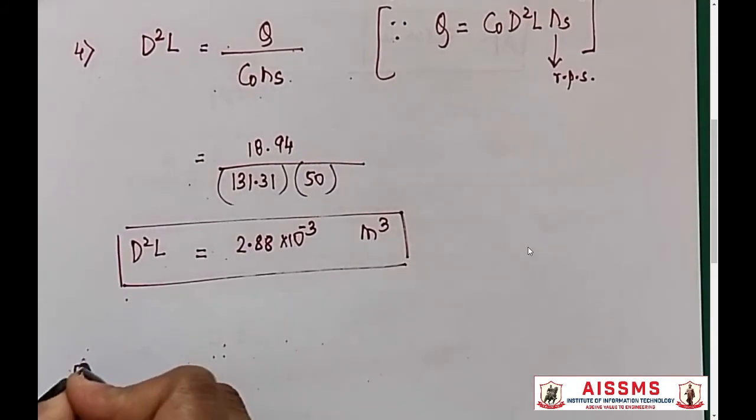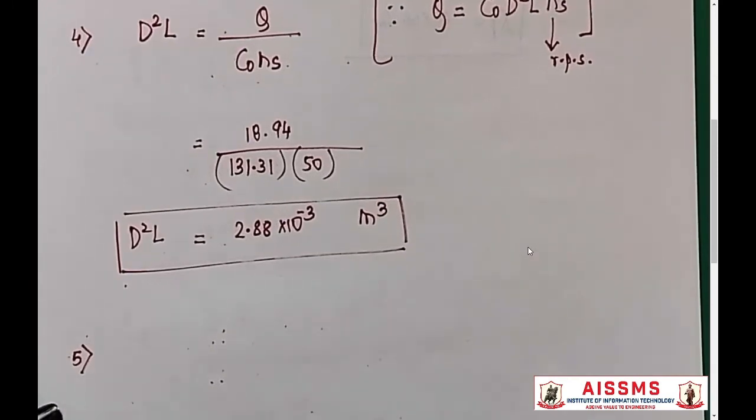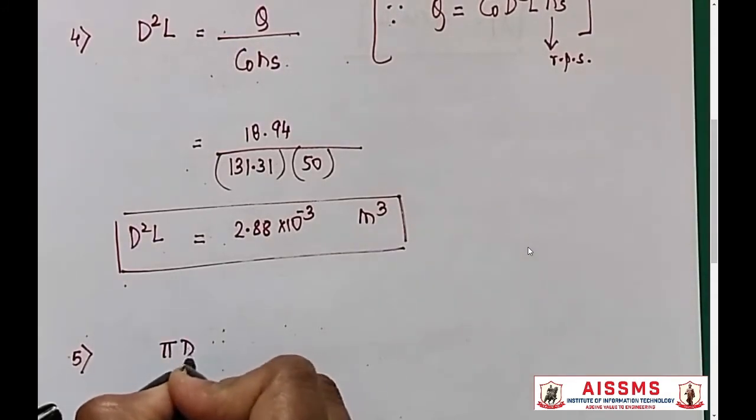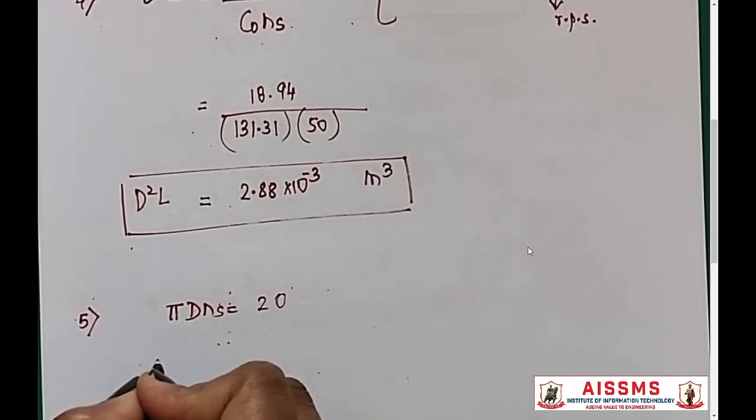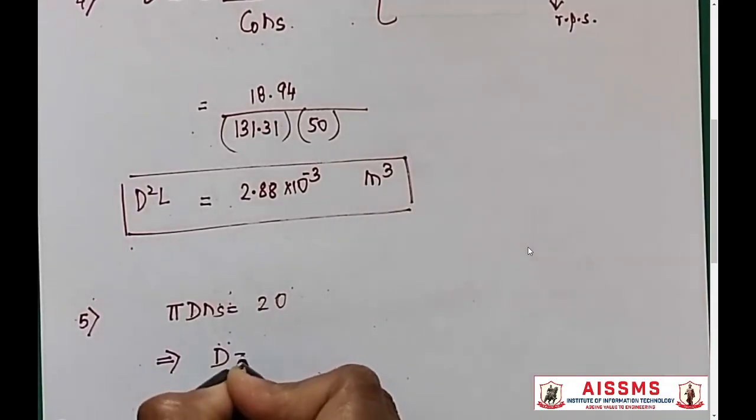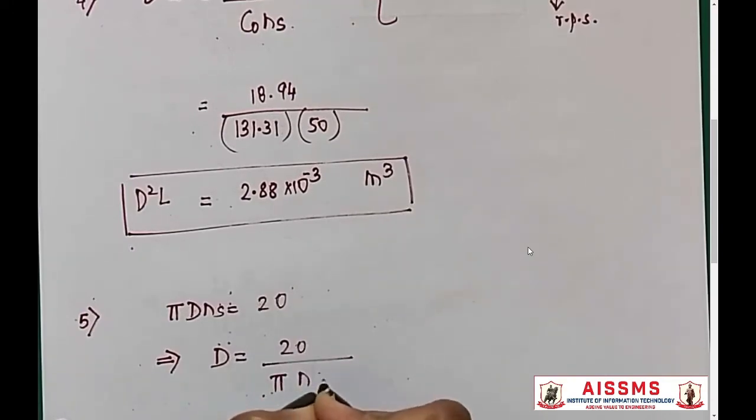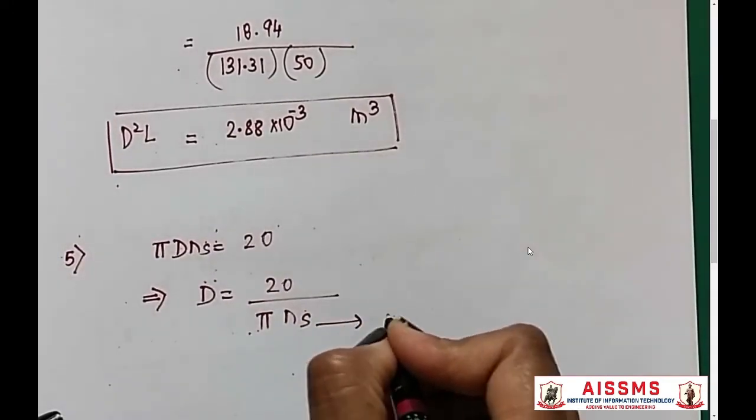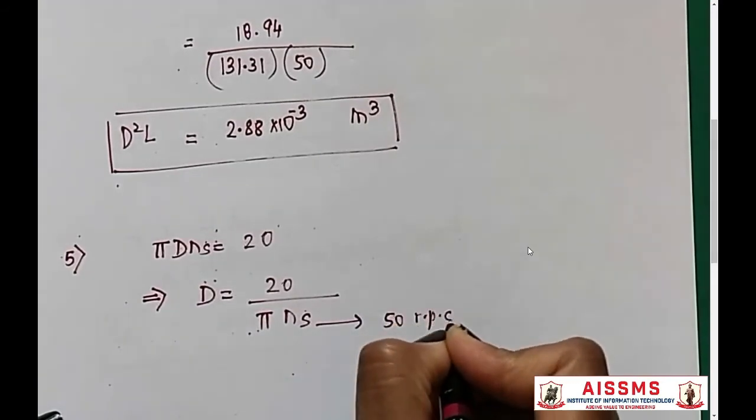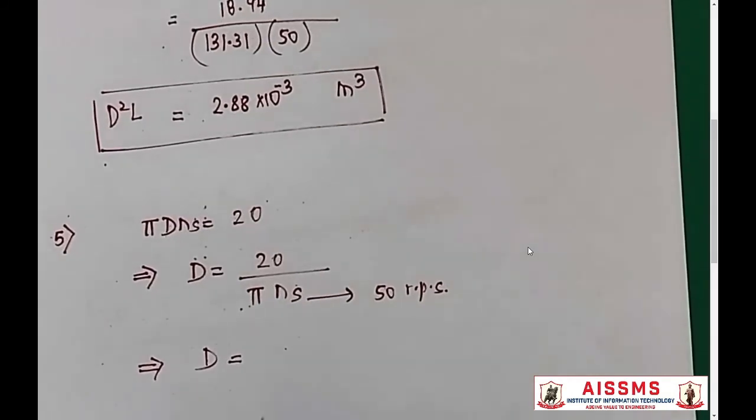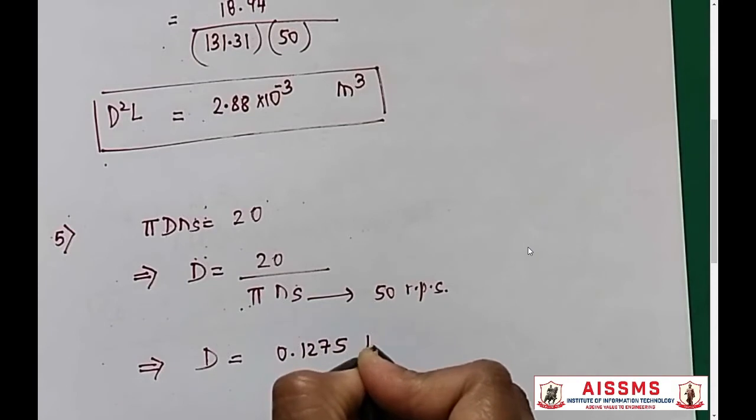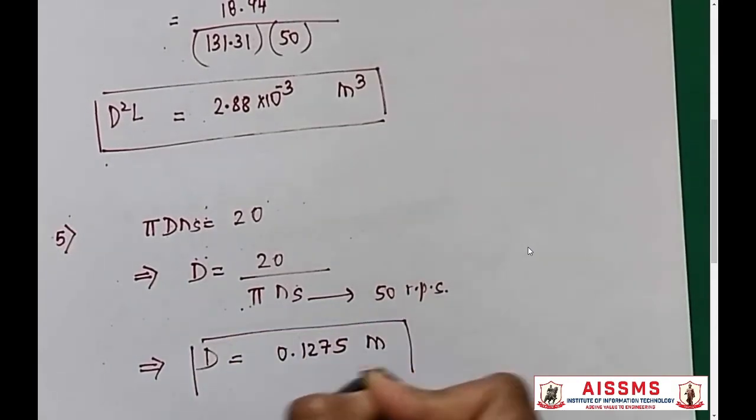They have given us the rotor peripheral speed. We have already assumed that the rotor diameter equals the stator diameter. From there we get π D NS equals 20. I have the value of NS, so when I put this directly, I can get the value of D as 20 divided by π NS. NS is 50 RPS. Just put the values and find D. D comes out to be 0.1275 meters.